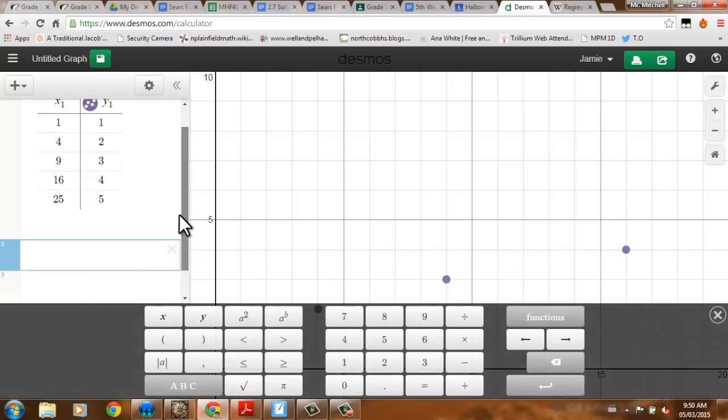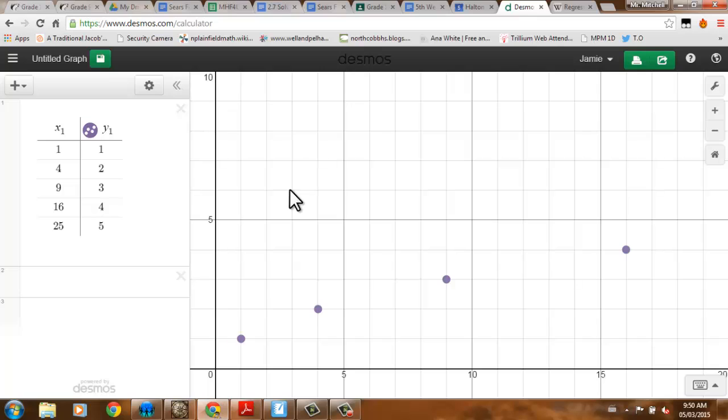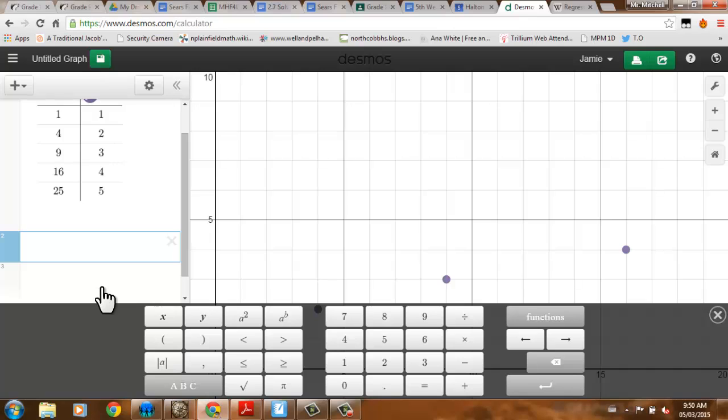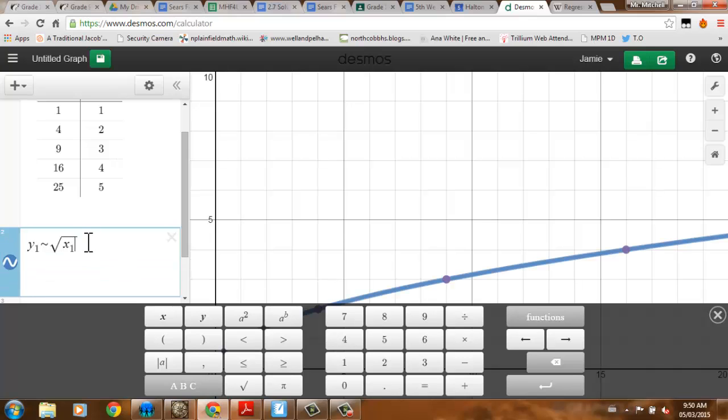What you need to do is think back to some of the functions you learned about in grade 11 math, grade 10 math, grade 9 math, because Desmos will handle really any of those functions. Here I've got a scatterplot that I think we can all agree is a radical function, a square root function. Let's just see if Desmos will handle that: y1 regressed to the square root of x. There we go.